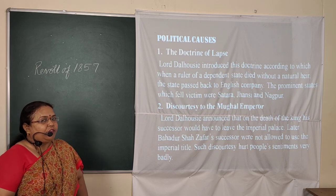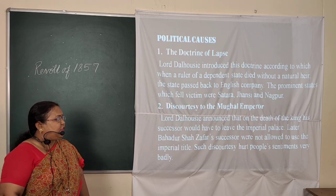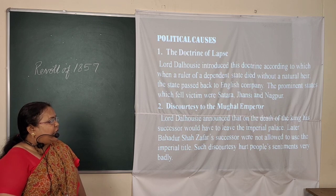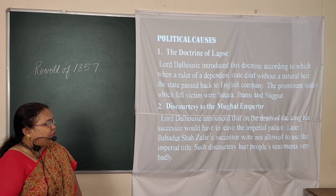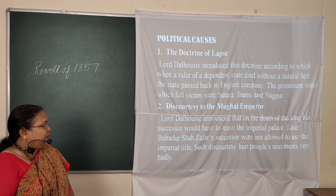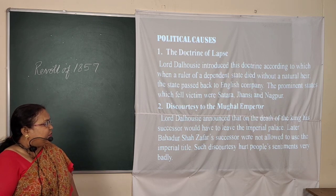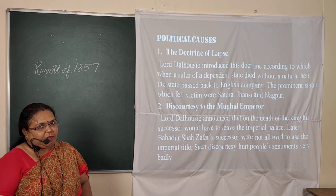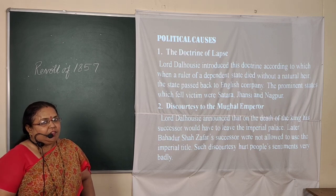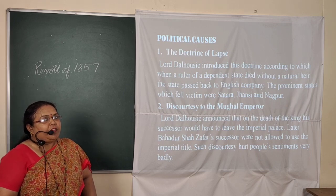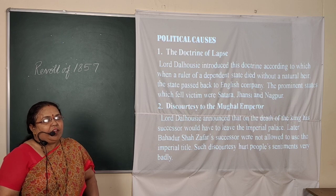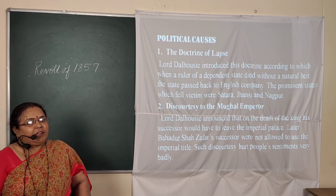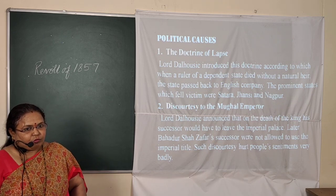The second political cause was discourtesy to the Mughal emperor. Lord Dalhousie announced that on the death of the king, the successor would have to leave the imperial palace. They would not be allowed to live in that palace, and later on, they were not allowed to use their titles either.